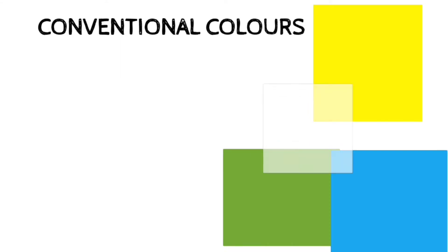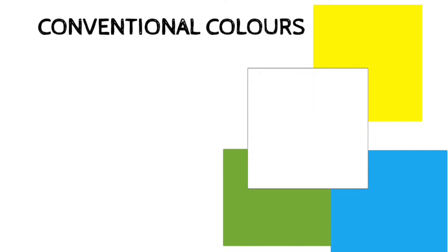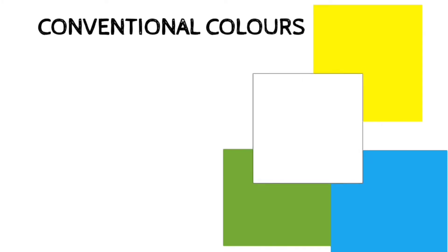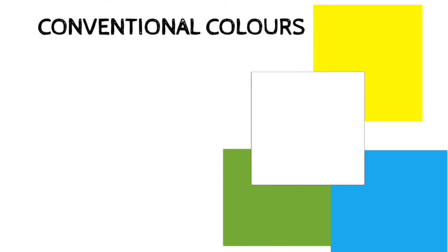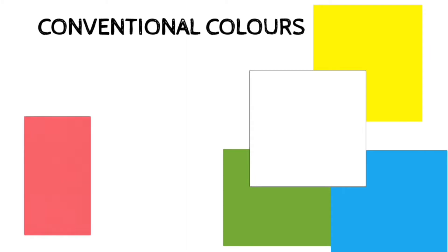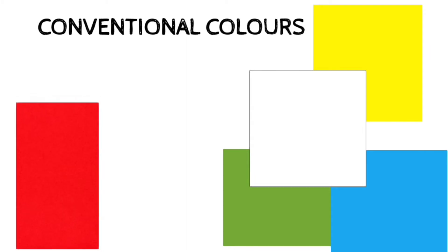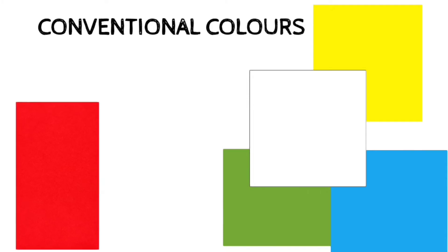Red color is used to show grid lines, both easting and northing, and their numbering, roads, cart track, settlements, herds and buildings. Brown color is used to show contour lines, their numbering, form lines and sand features such as sand hills and dunes.